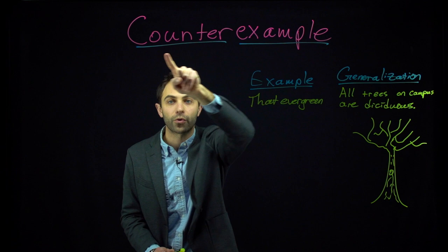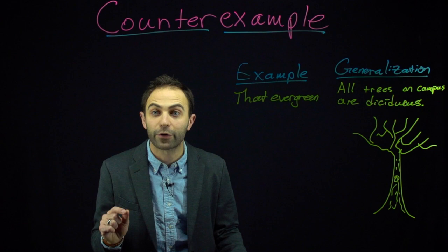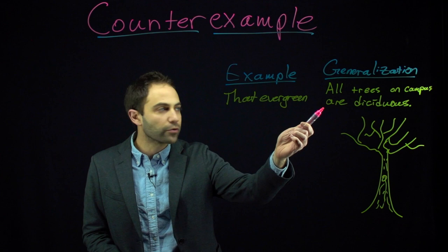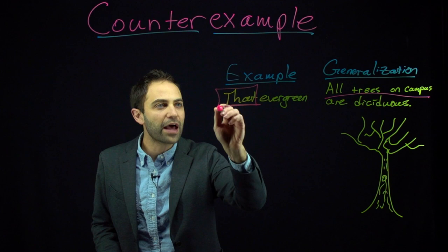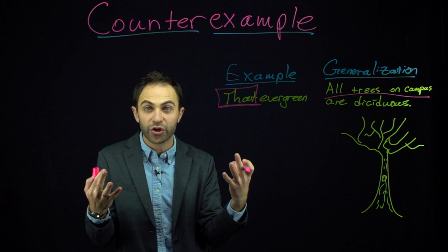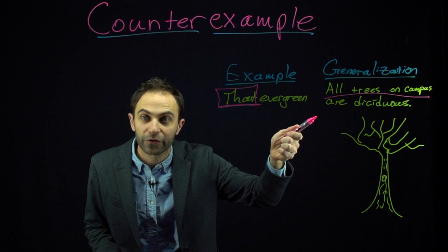Notice something about this counterexample: it's a real tree. It's got to be a real tree for it to work. If someone makes a generalization about a specific group of trees — all the trees on campus — then the counterexample must be a real tree. You've got to find a real tree in the real world. But there are also times when you don't need a real thing to serve as your counterexample.